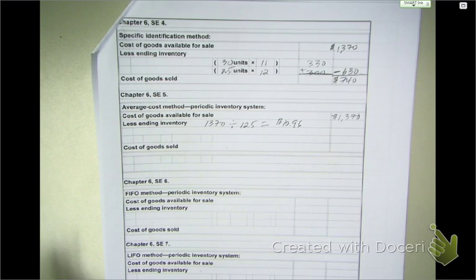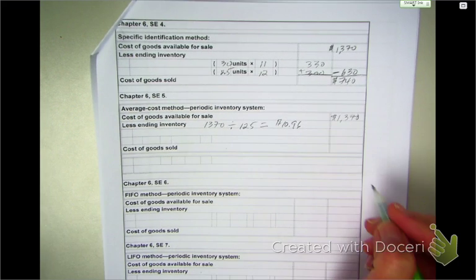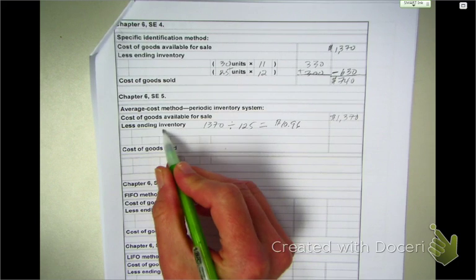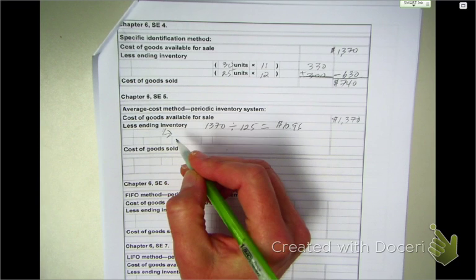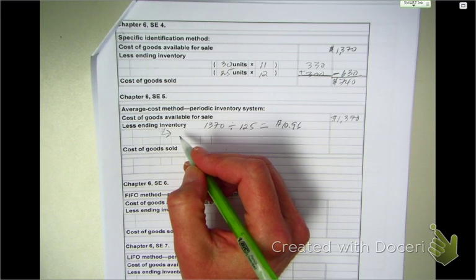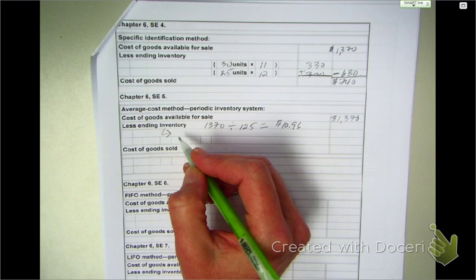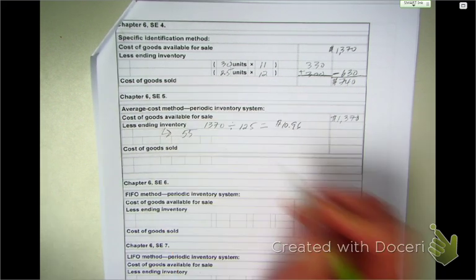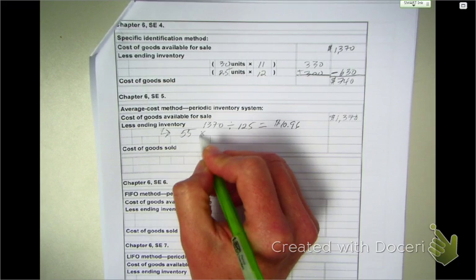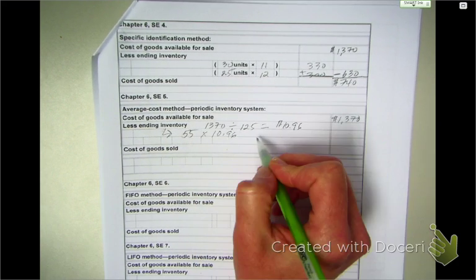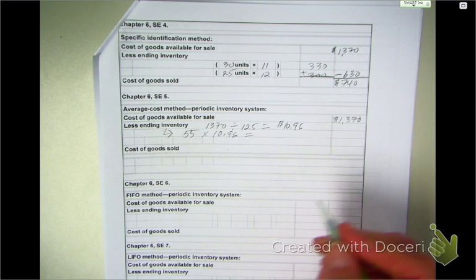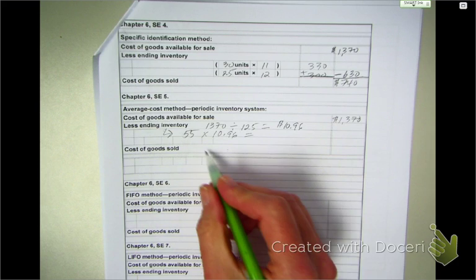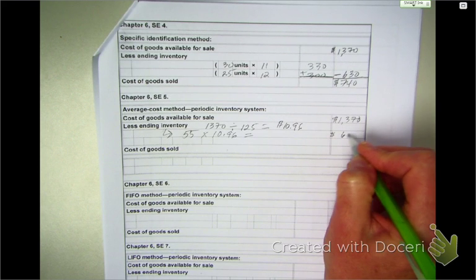Either the cost of goods sold or the ending inventory. Because if I'm going to try to figure out my value of my ending inventory, let's do the ending inventory. How many units do I have in ending inventory? 55. So, 55, I'm going to multiply that times $10.96.